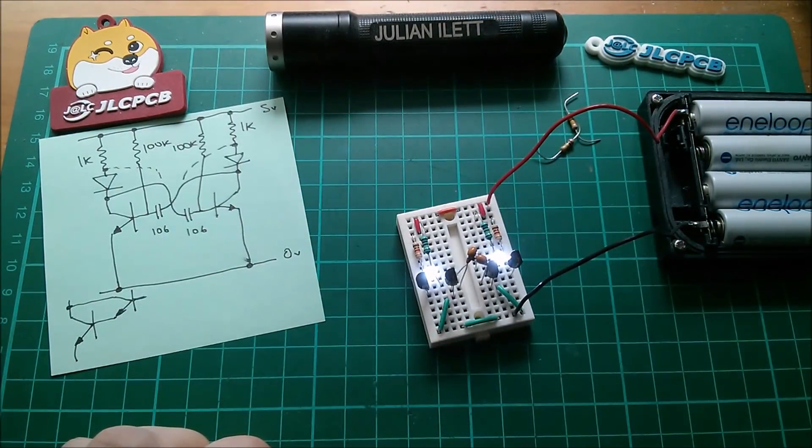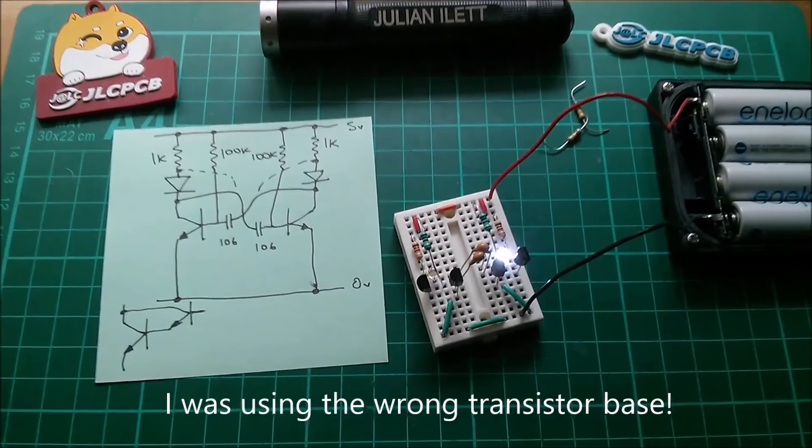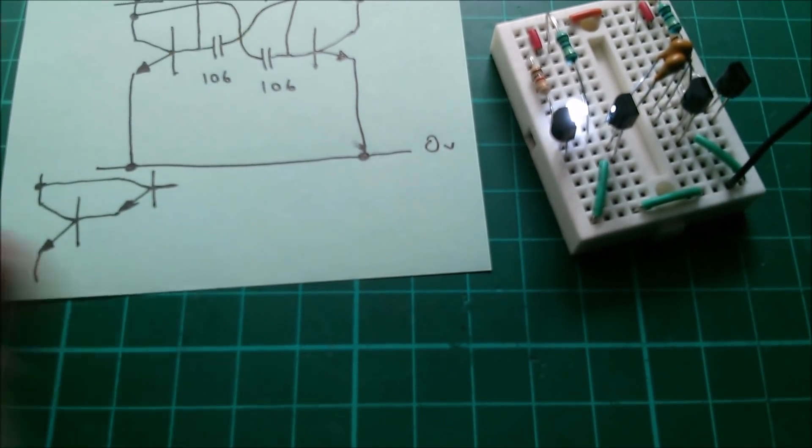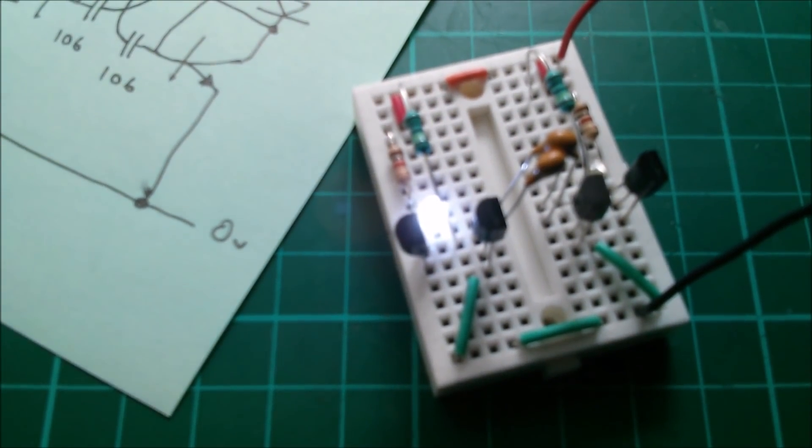And there it is and it's flashing really slowly because of those one megaohm resistors. Let's have a look and see if we get that bright pulse problem.